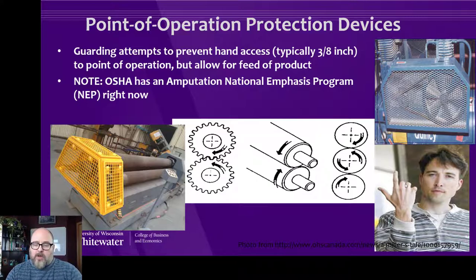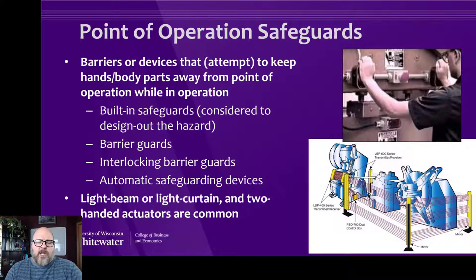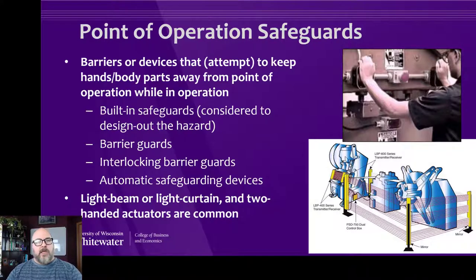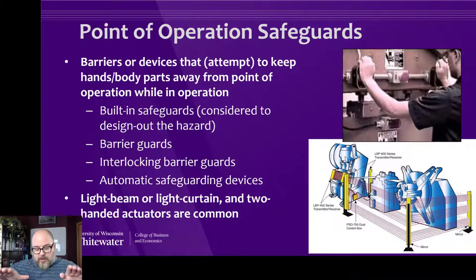For point of operation protection, there are in-running nip points where you just have to put in a permanent guard with no need for human access. You can also have a two-hand actuator — in order for the machine to cycle, a person must have both hands pressing buttons, which means there's no hand free to stick into the machine. However, workers are smart and innovative: they will attach something to one button and just touch the other to free a hand. Sometimes you have to put the two-hand actuators farther from the equipment. New technology requires you to press, release, and press again so you can't hold one down constantly.